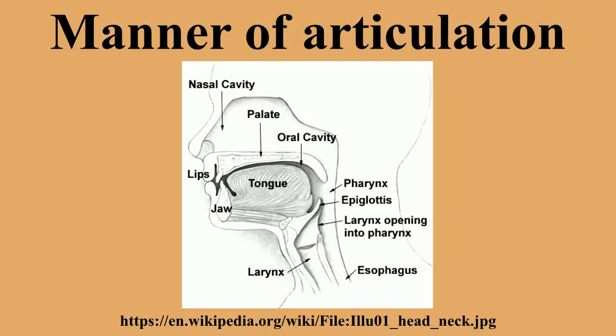Flap (often called a tap): a momentary closure of the oral cavity. The T and D of 'butter' and 'udder' are pronounced as a flap in North American and Australian English. Many linguists distinguish taps from flaps, but there is no consensus on what the difference might be, and no language relies on such a difference. There are also lateral flaps. Trill: in which the articulator is held in place and the airstream causes it to vibrate. The double R of Spanish 'perro' is a trill. Trills and flaps, where there are one or more brief occlusions, constitute a class of consonant called rhotics.